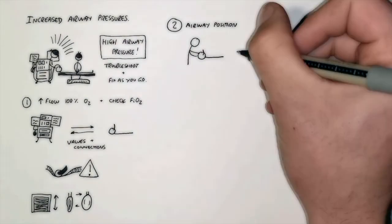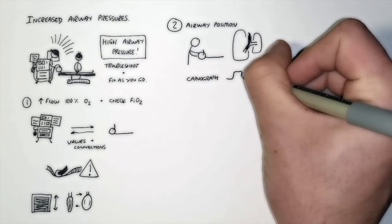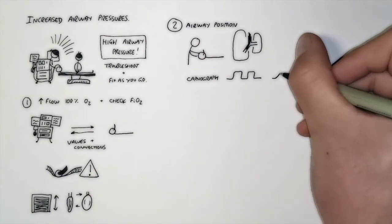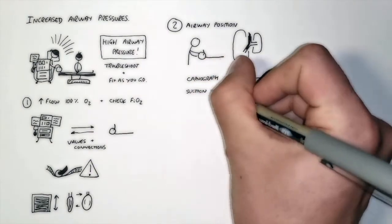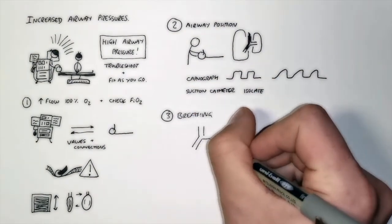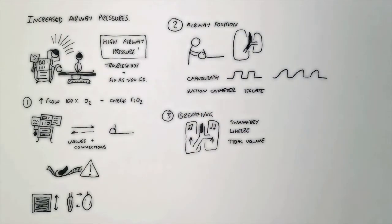Check the position that the tube isn't in too far, then have a look at your capnography trace. In the case of any obstruction to airflow, this will show the classic pattern on the right rather than the nice square trace on the left. Listen to the patient's chest for asymmetrical air entry or wheeze and look at the tidal volumes on the monitor.